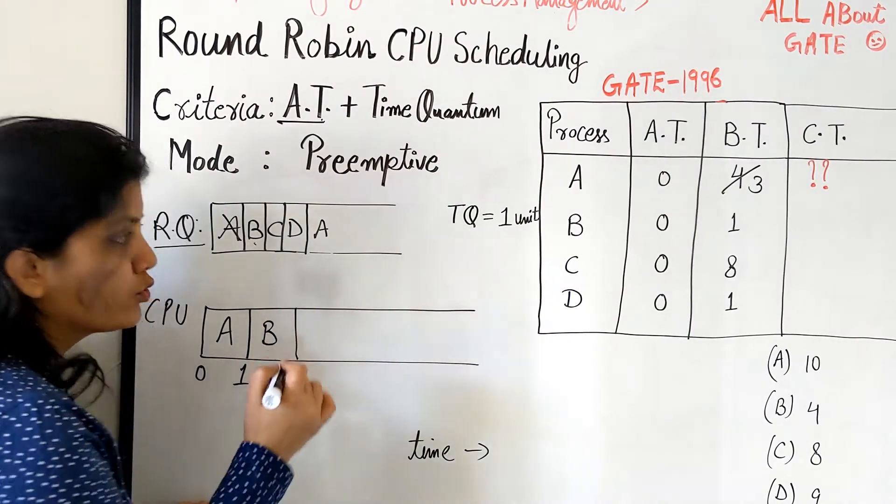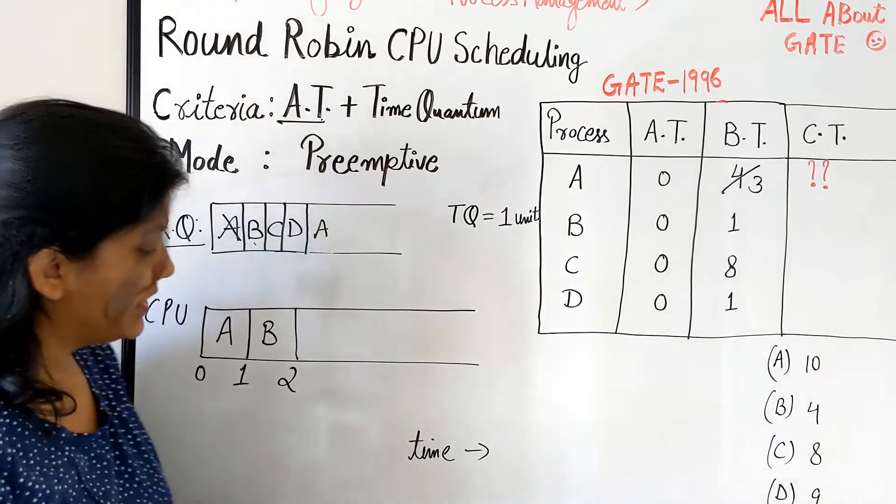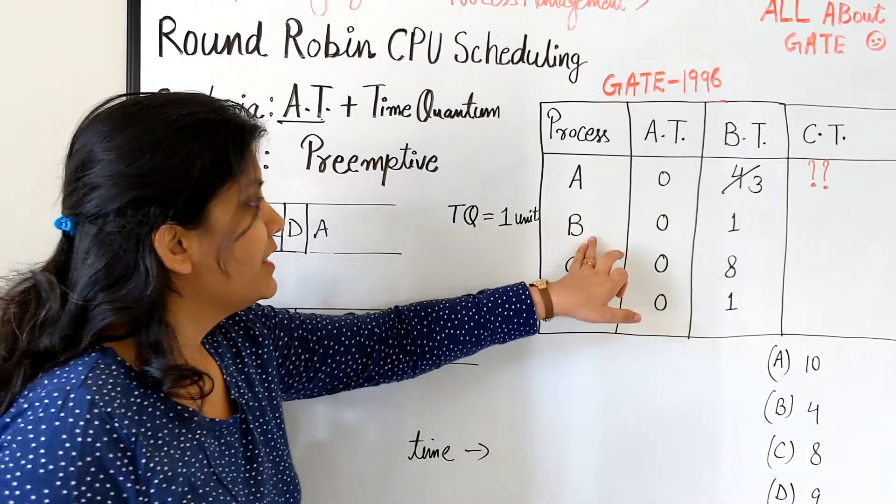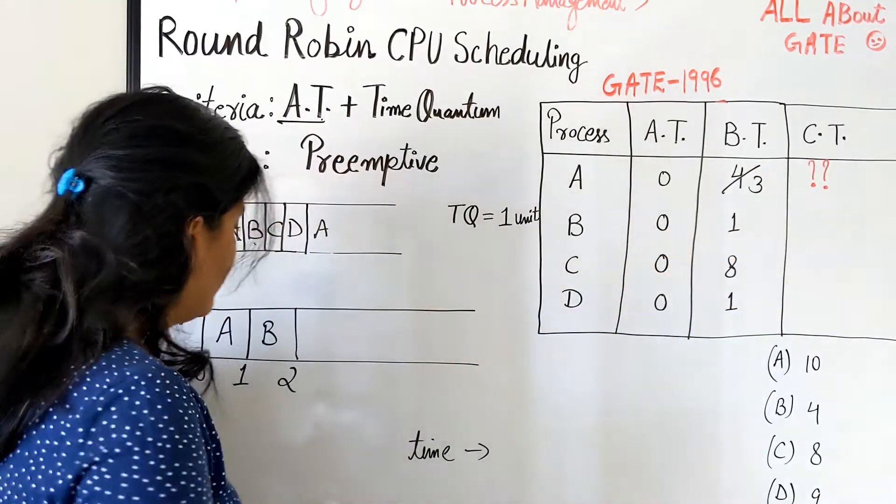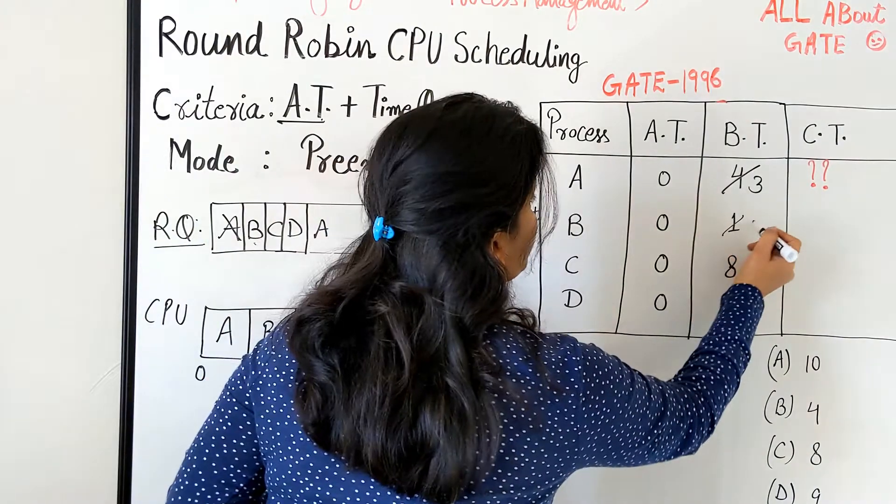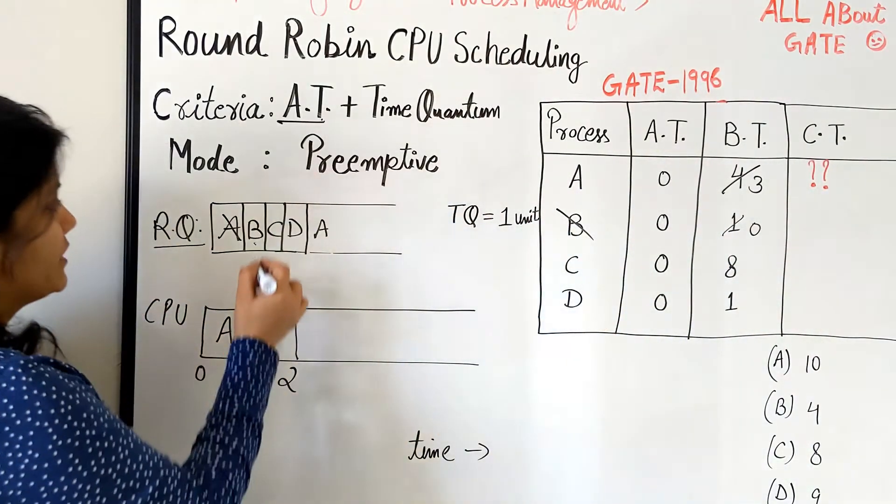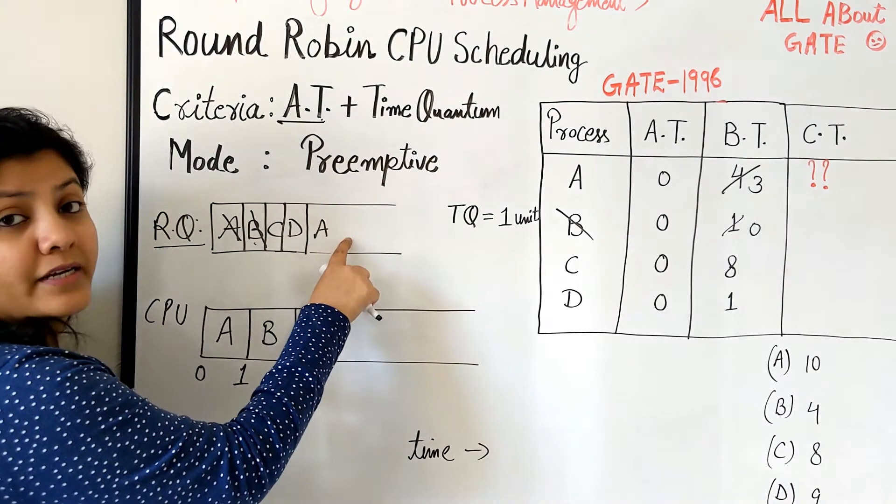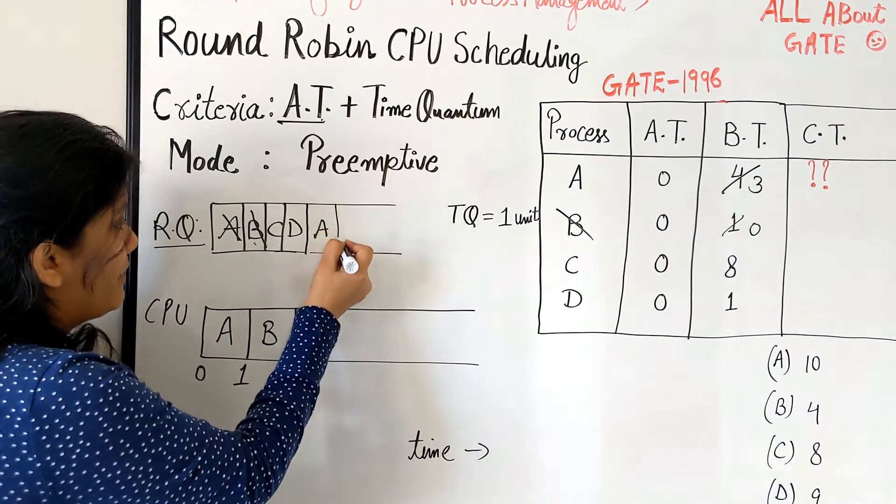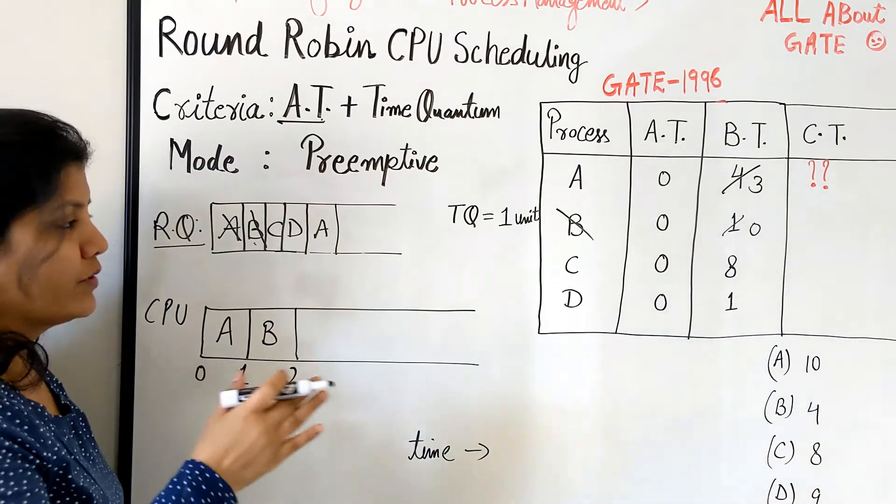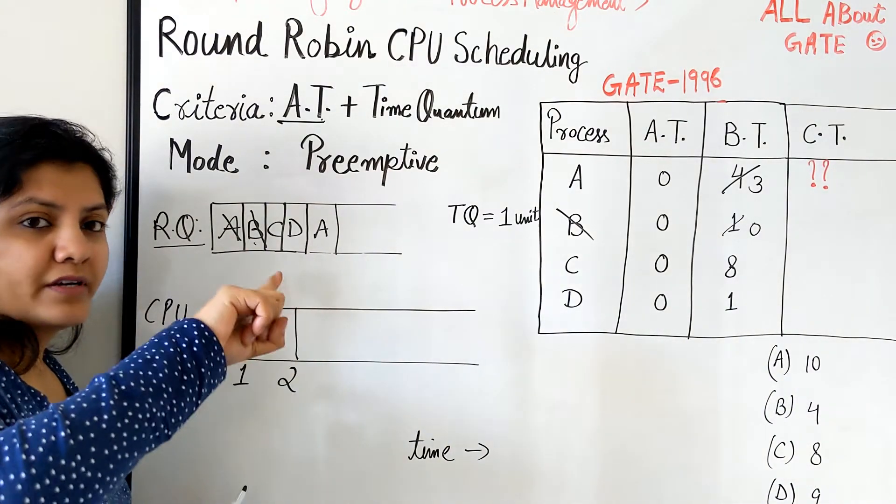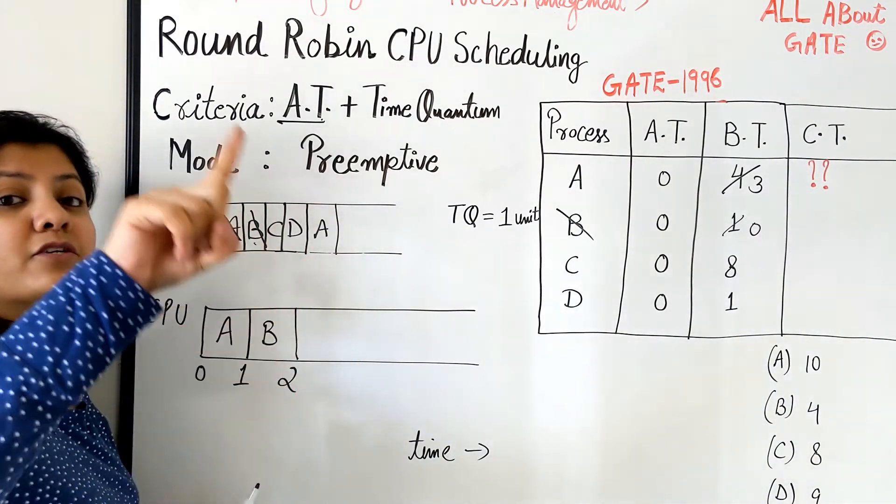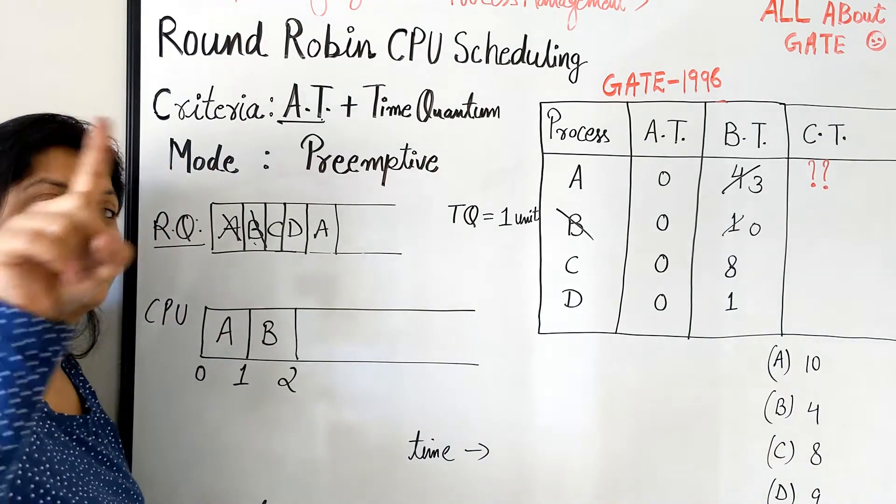Now again from 1 to 2 we cannot get more than that but you see here the process B needs only one quantum so with this it gets finished. It becomes 0, it becomes finished and it becomes finished. Once B has finished you need not to keep it back in the ready queue furthermore. There is no requirement because it has finished. Correct? So it actually goes from ready to running. From running it is going to the terminate state. That's all.